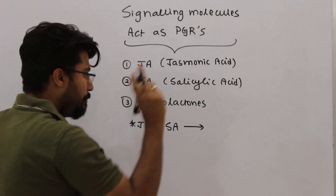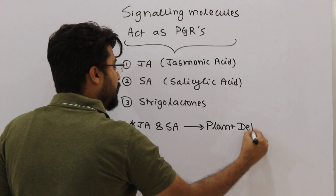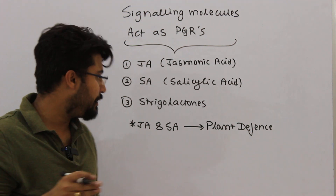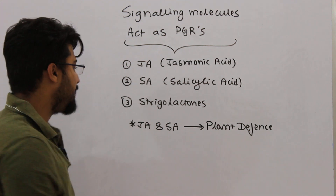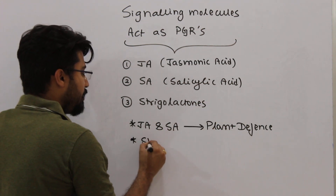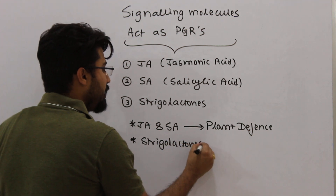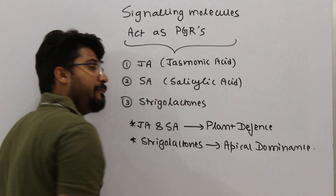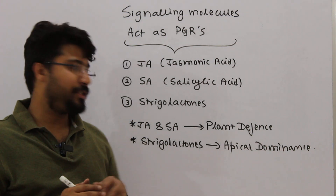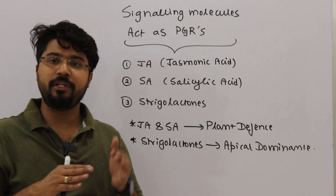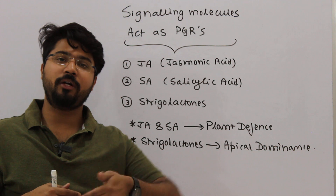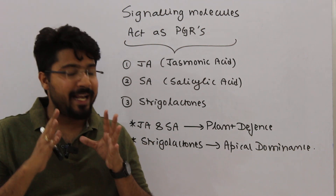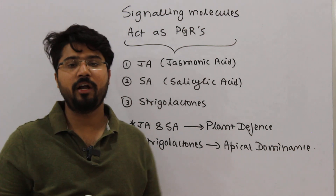JA and SA play extremely crucial roles in plant defense against pathogens and herbivores — the defense system of plants is triggered by jasmonic acid and salicylic acid. As far as strigolactones are concerned, they will come up again for an important response known as apical dominance. In basic classes like Class 11, NCERT mentions that apical dominance is due to auxins, which is correct — but auxin actually stimulates strigolactone synthesis, and it is strigolactone which actually results in apical dominance.